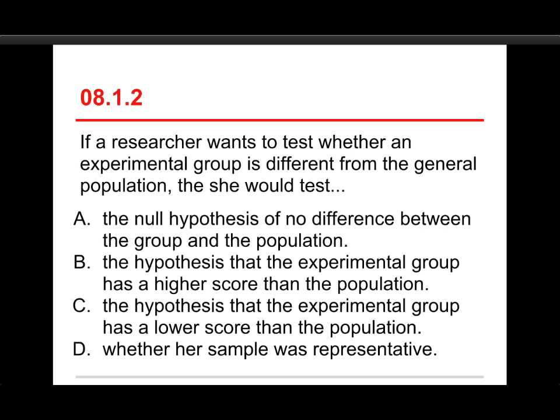Next question. If a researcher wants to test whether an experimental group is different from the general population, then she would test the null hypothesis of no difference between the group and the population, or the hypothesis that the experimental group has a lower score than the population.